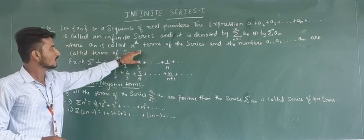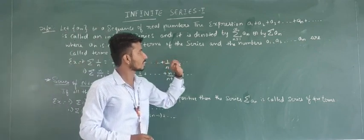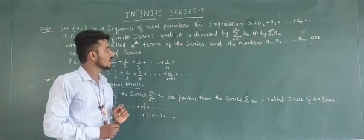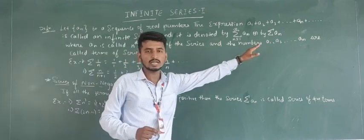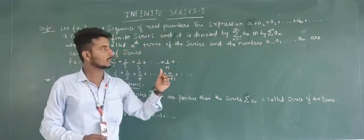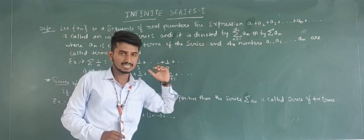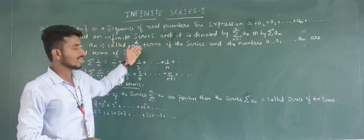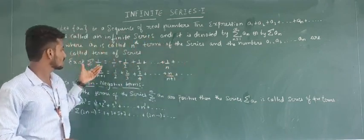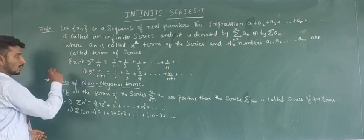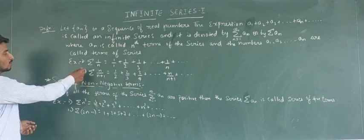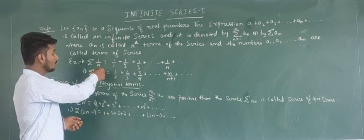Here, an is called the nth term of the series. The numbers a1, a2, ... up to an are called the terms of the series, and the last term an is called the nth term of the series. As an example, consider the summation of 1/n, which is a type of infinite series.